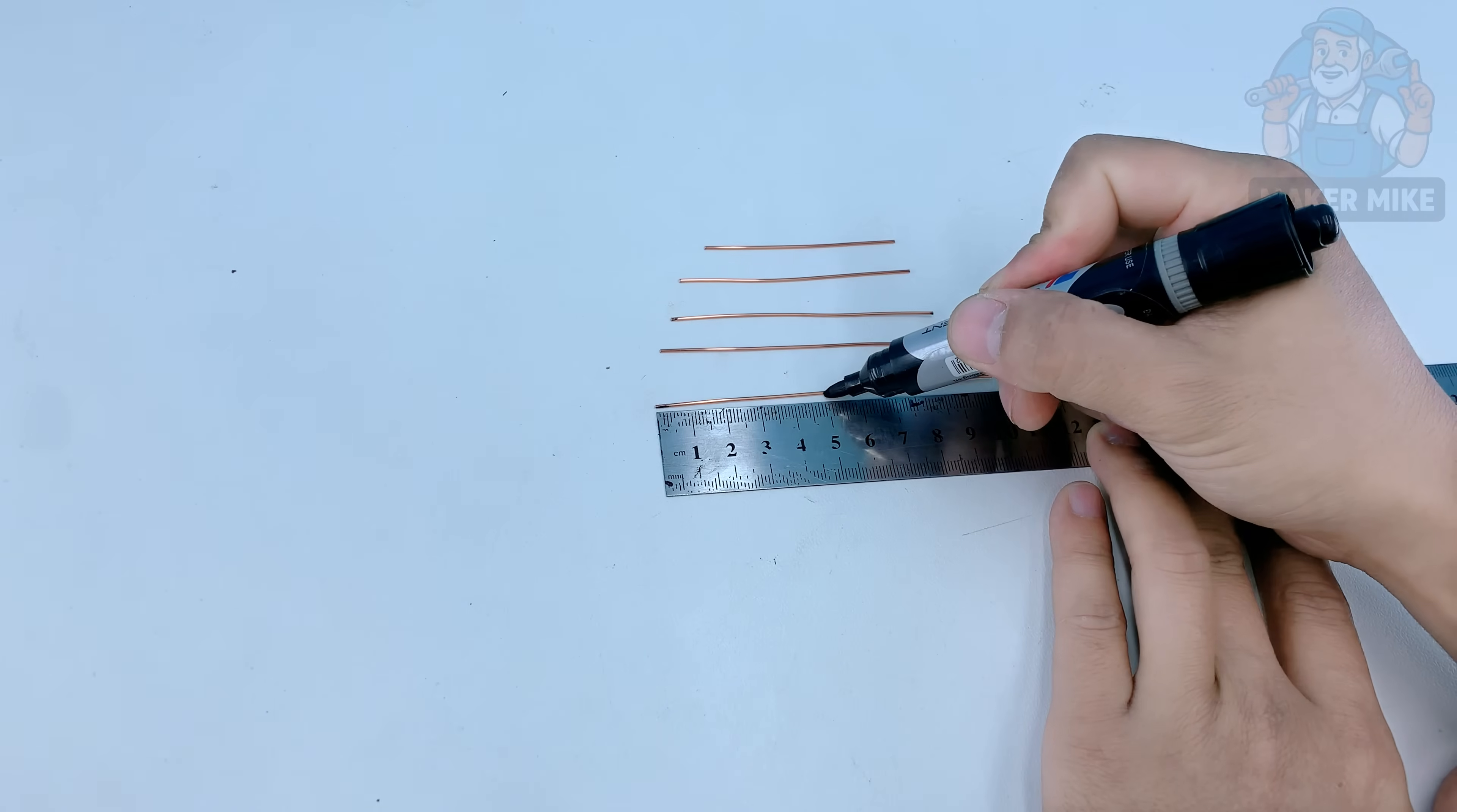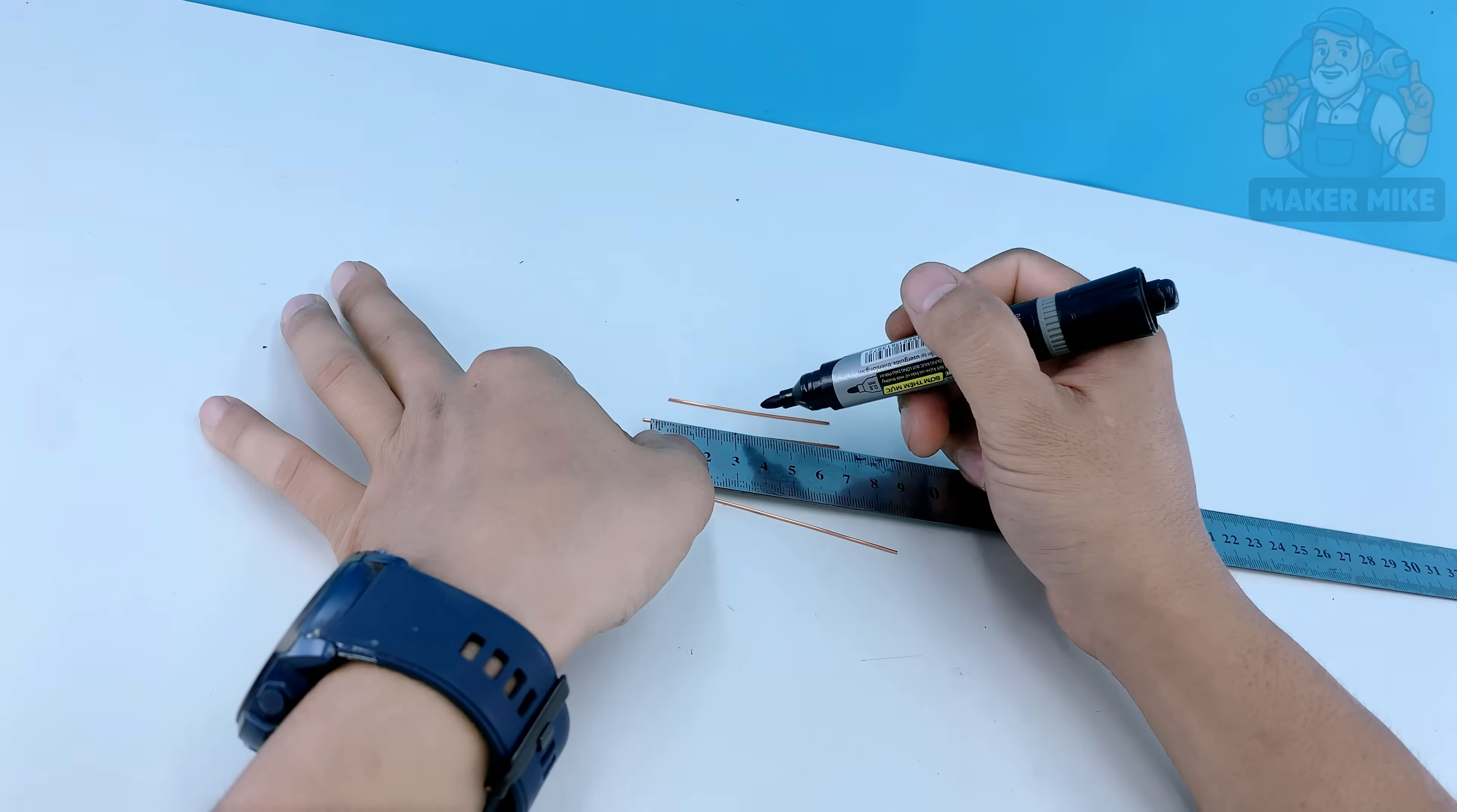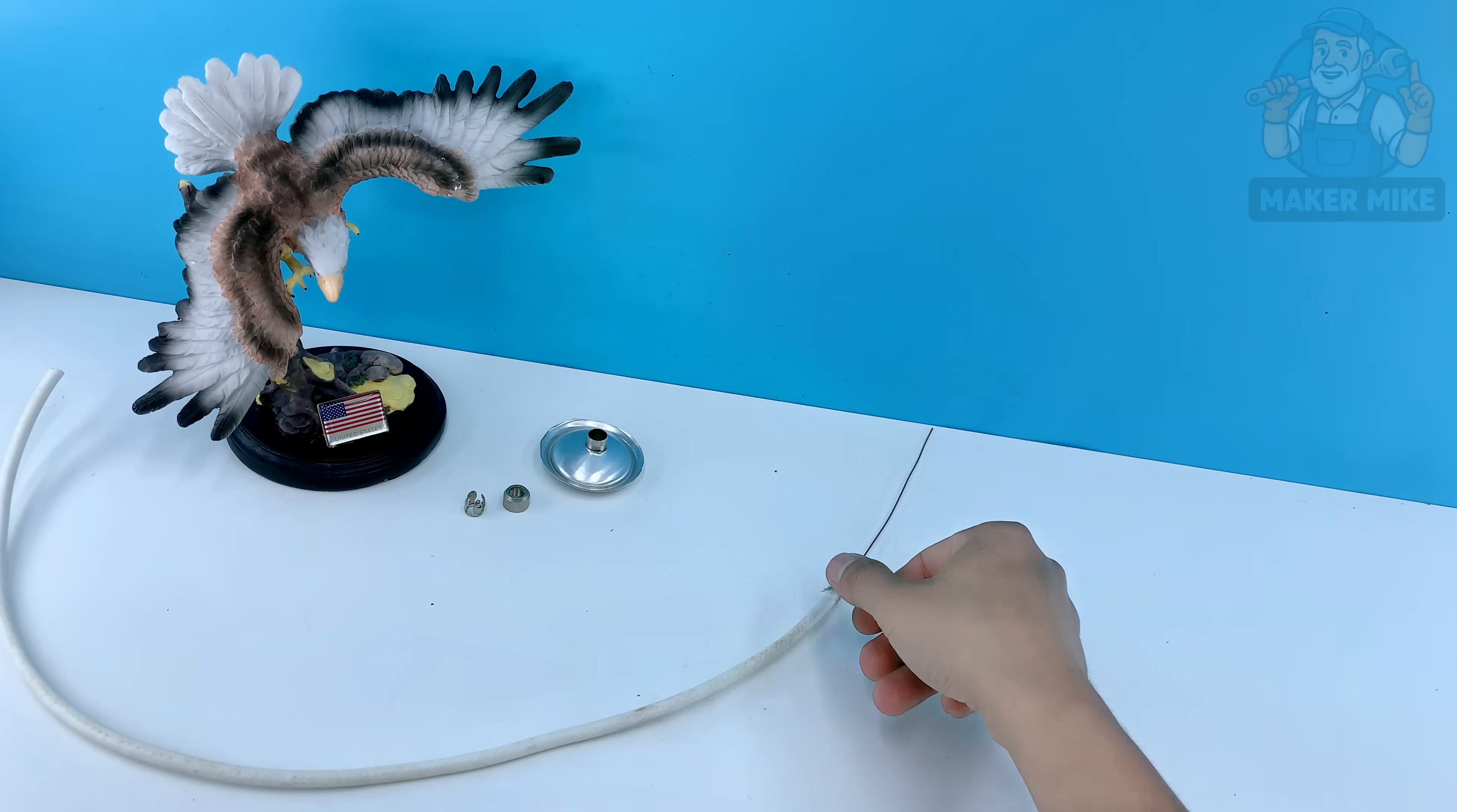Next lay them side by side on your workbench and mark the center point on each piece with a marker or a light scratch from your knife. Those marks will help you position them accurately when we solder everything together. Here's a little tip from experience, keep the pieces lined up from longest to shortest left to right. It'll make it easier to identify them quickly once we start building the antenna head.